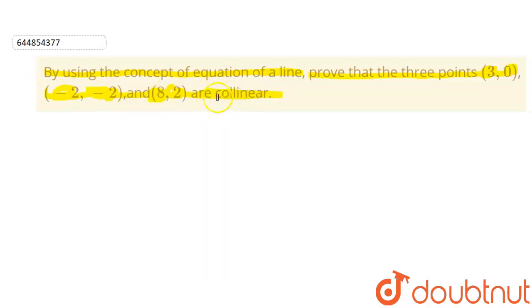Collinear means all these three points will be on the same line. We have to prove that using the concept of equation of line. So first of all, we will see what is the concept of equation of line.